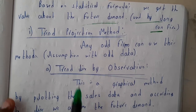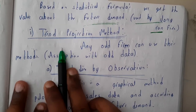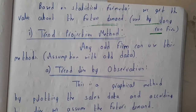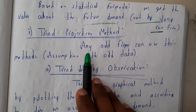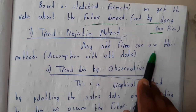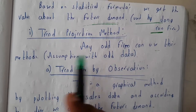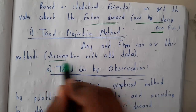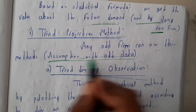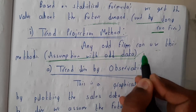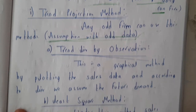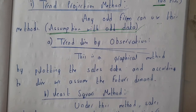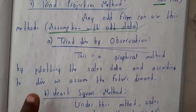The first method is trend projection method. In trend projection method, any old firm can use this method — based on old data, we get new data. The first sub-method is trend line by observation, which I hope everyone remembers.